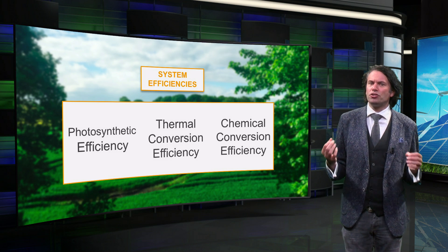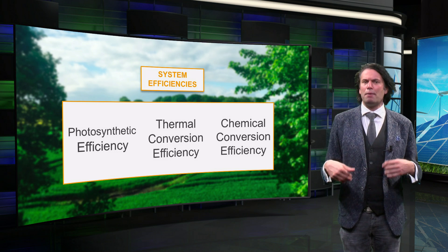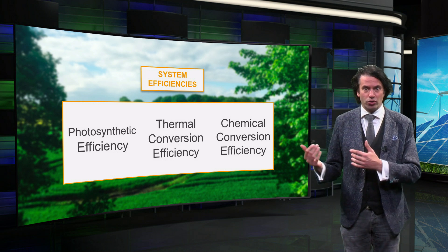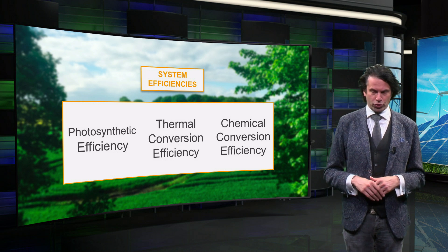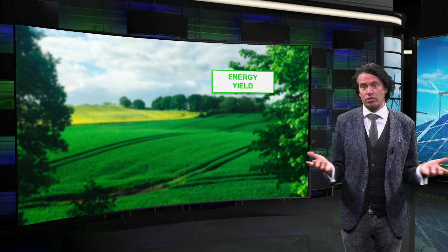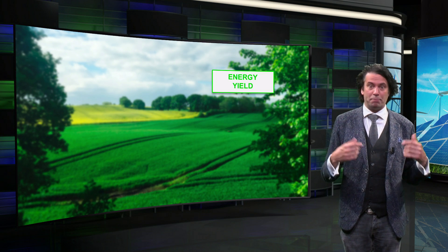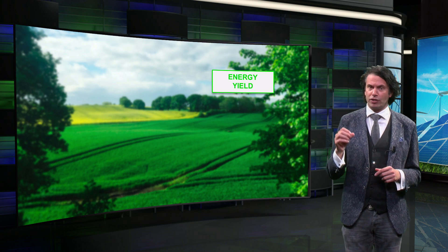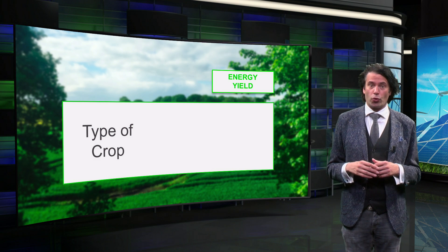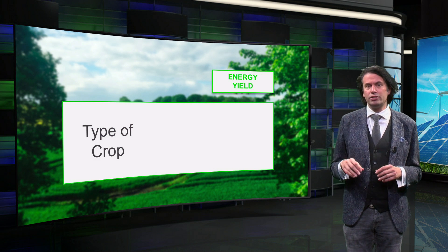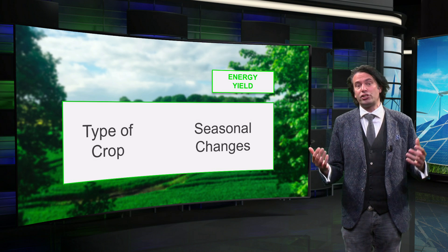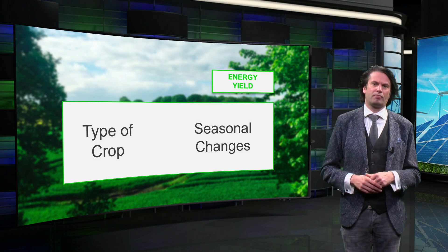Additionally, depending on the type of biofuel, a chemical conversion step might be included — for example, sucrose to ethanol — which has its own conversion efficiency. A biomass power plant also has some practical losses, represented by its capacity factor. Two main factors influence the capacity factor. First, the energy yield depends on the type of crop that is used. Second, the crop's growth is dependent on external conditions like weather, which change over the course of a year.